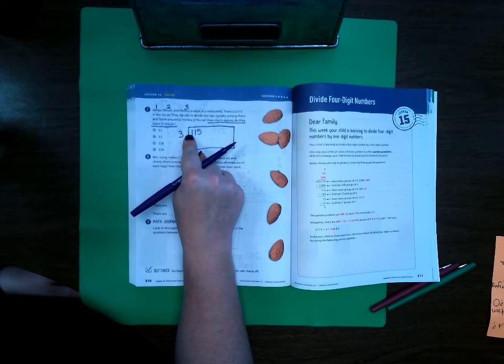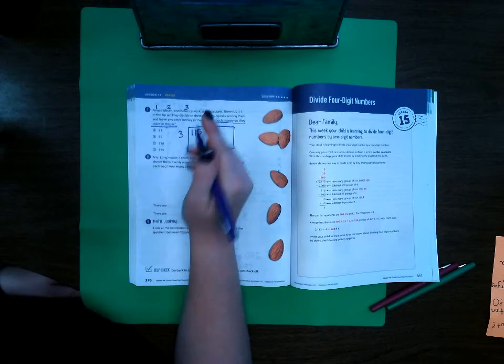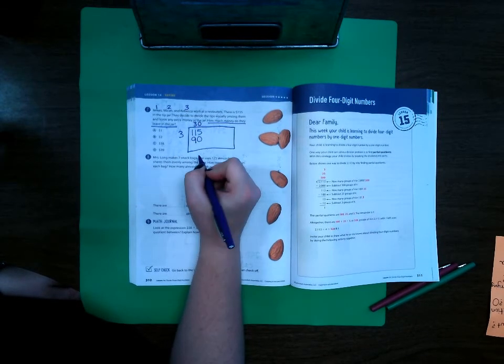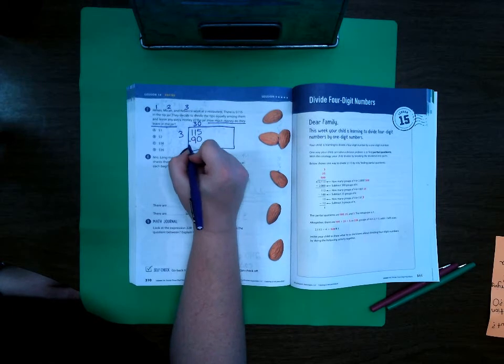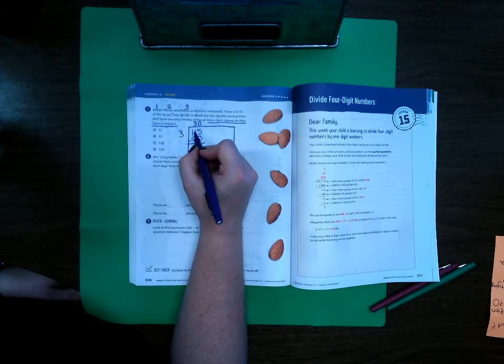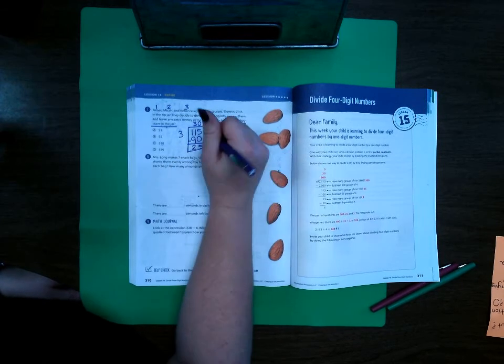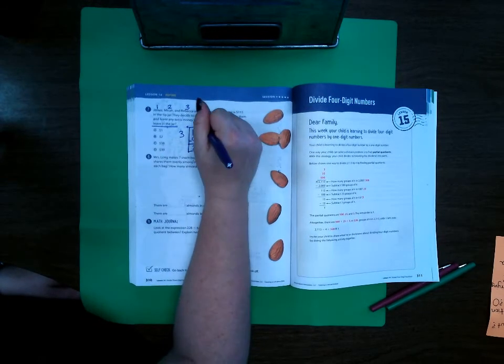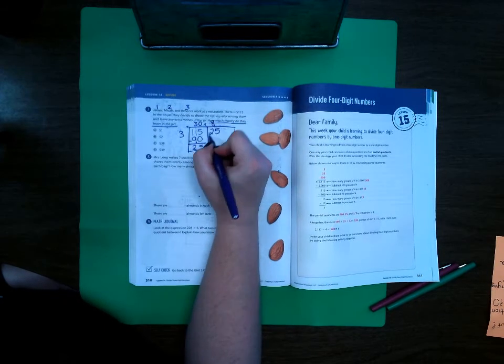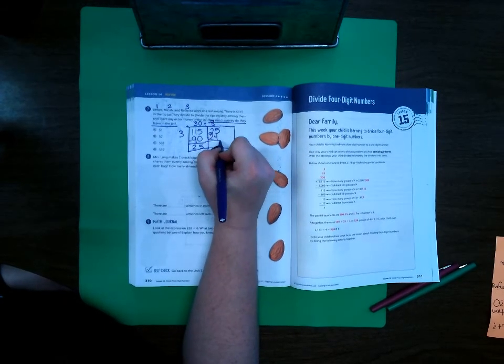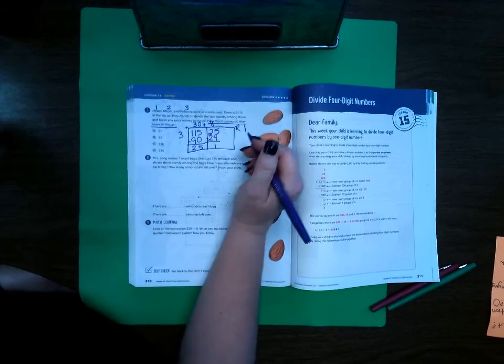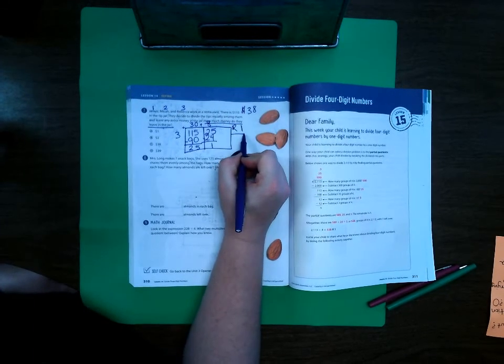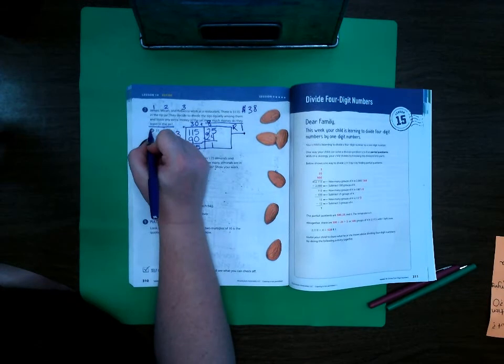3 times 3 is 9. If I add a 0 it makes 90 which is still smaller than 115. So 5 minus 0 is 5, 11 minus 9 is 2. So then I'm going to bring my 25 up here. 3 times what is as close to getting to 25 without going over? Well it's 8. 3 times 8 is 24. That leaves a remainder of $1. So they each get $38 and there's $1 left over and that $1 is what goes back in the tip jar. So it's $1.